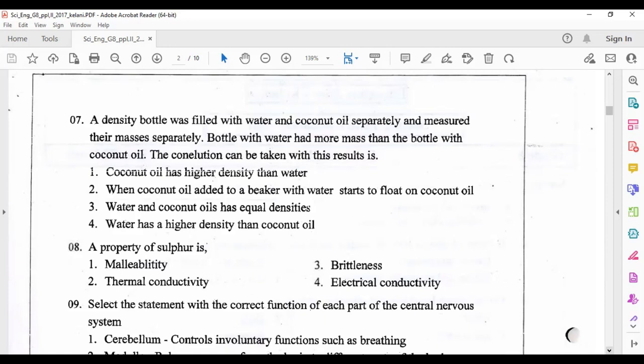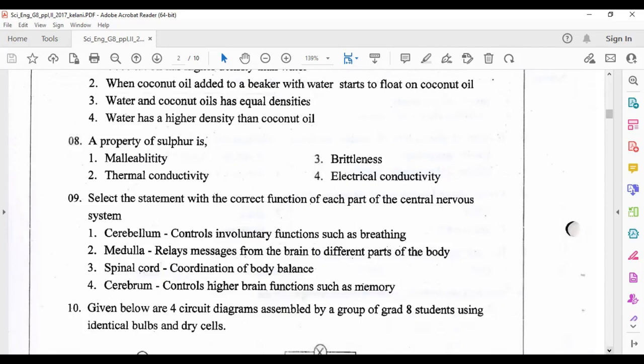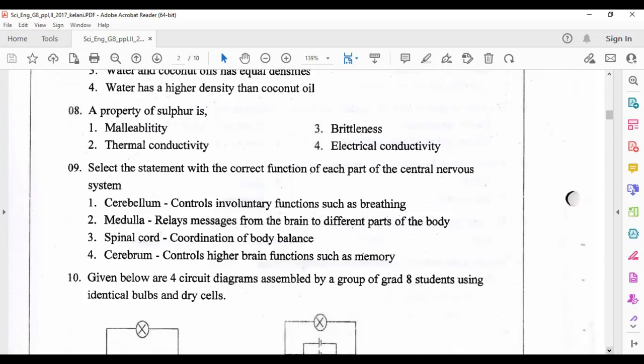Eighth question: a property of sulfur is brittleness, because sulfur is a non-metal. Brittleness is a property of non-metals. Brittleness means can be broken easily. Other properties - malleability, thermal conductivity, electrical conductivity - are properties of metals.